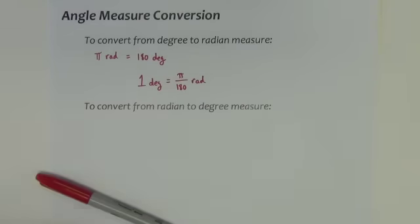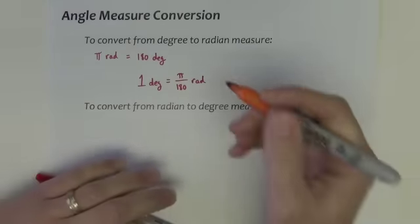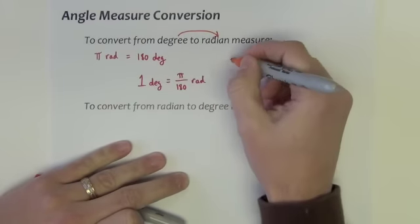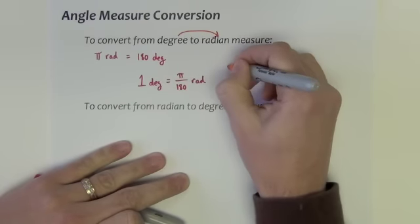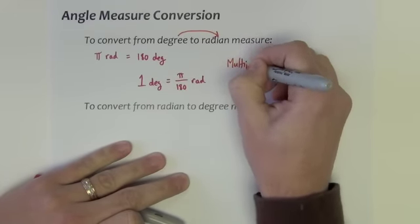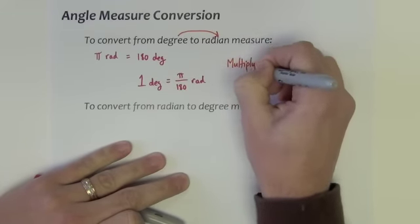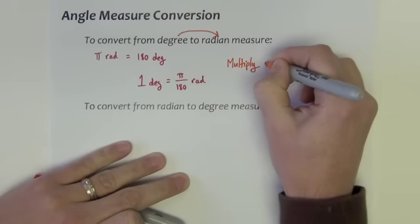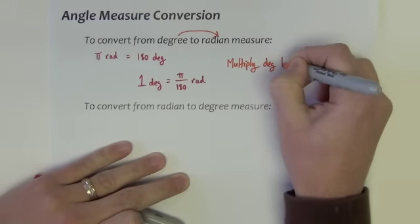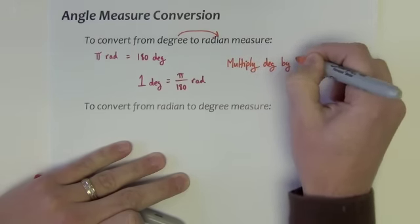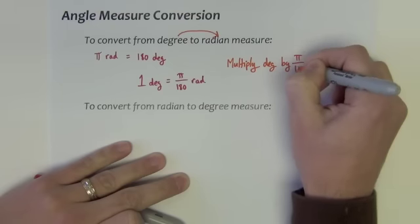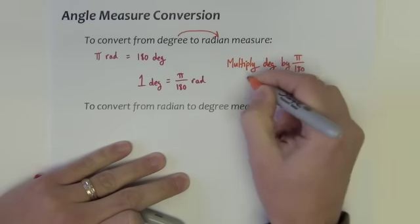Therefore, to get from degrees to radians, you multiply the degrees by pi over 180.